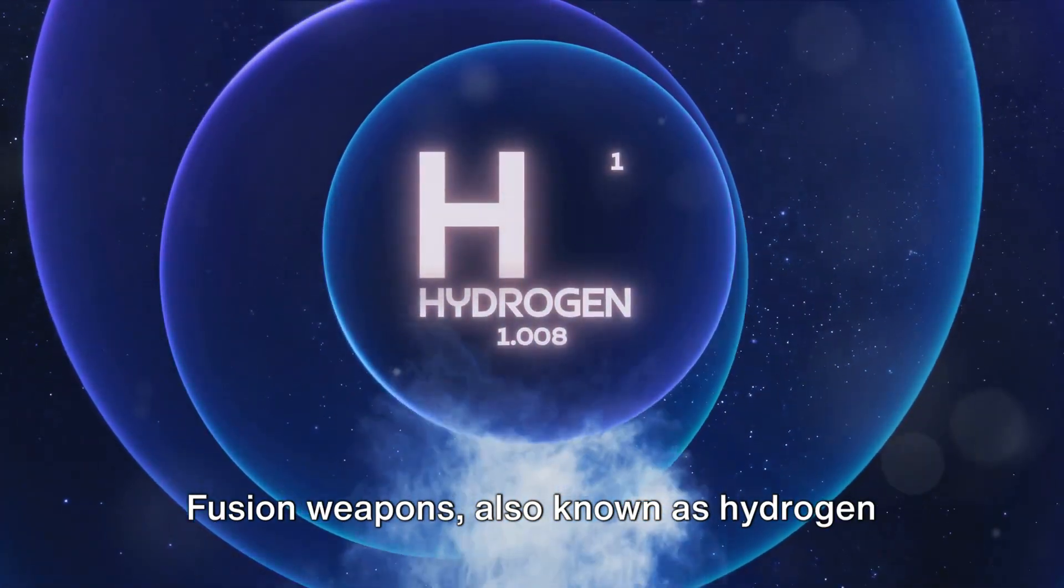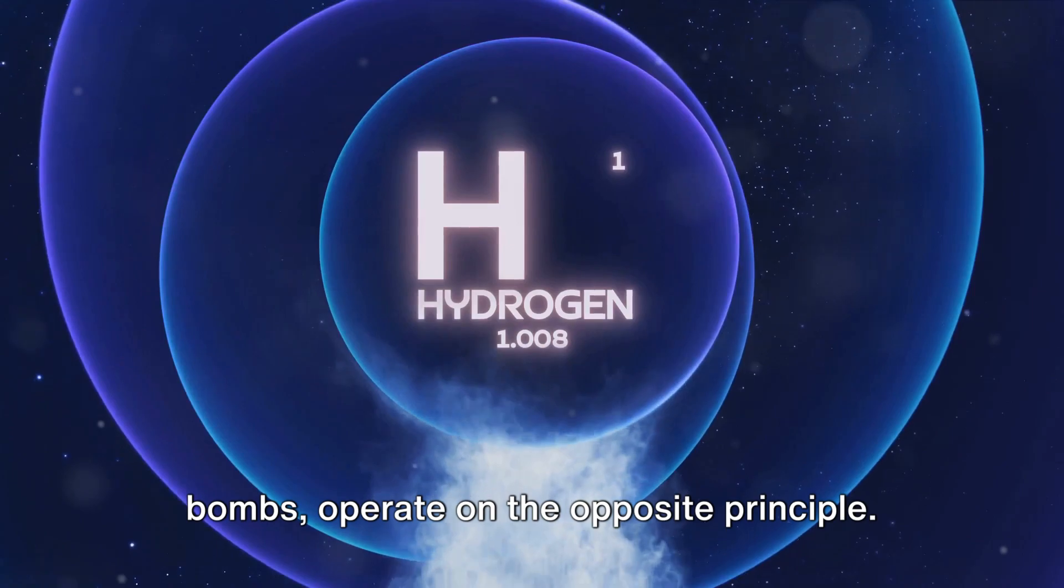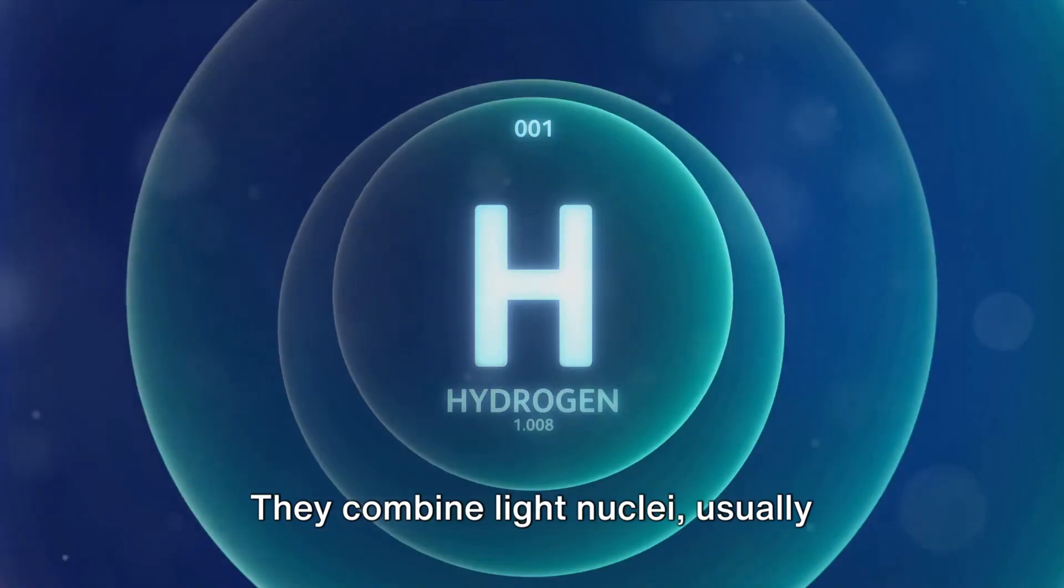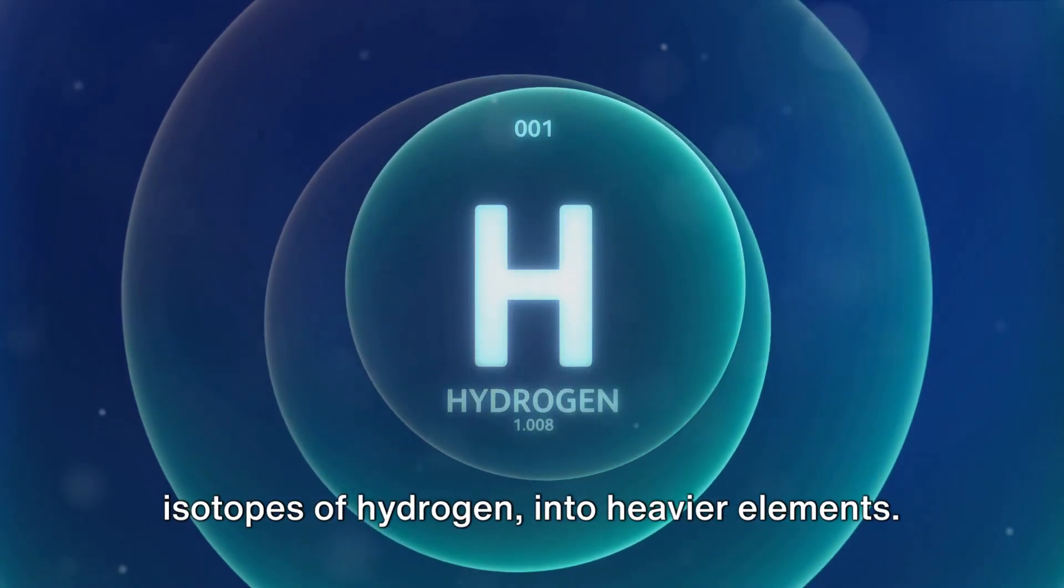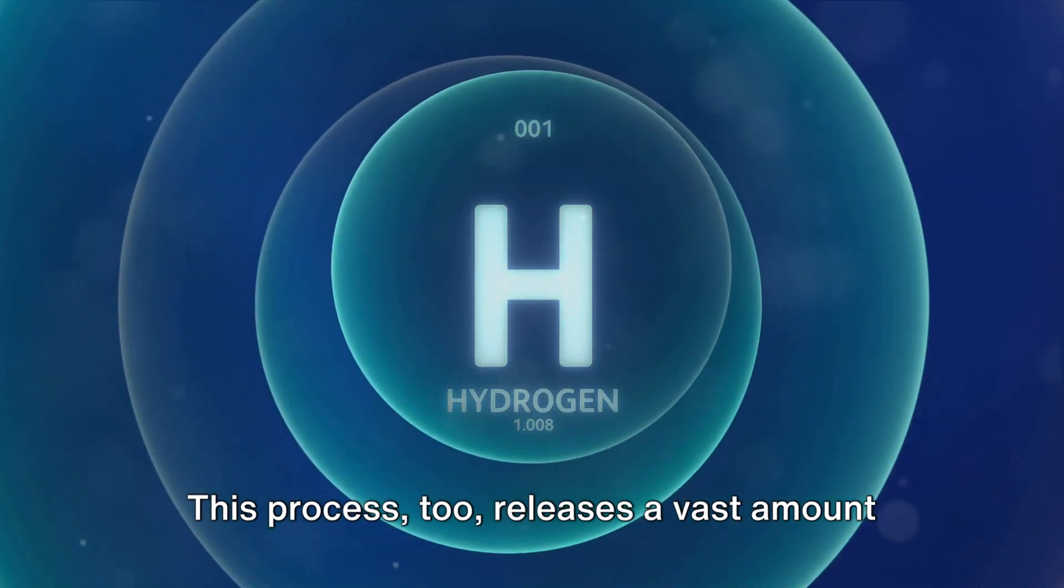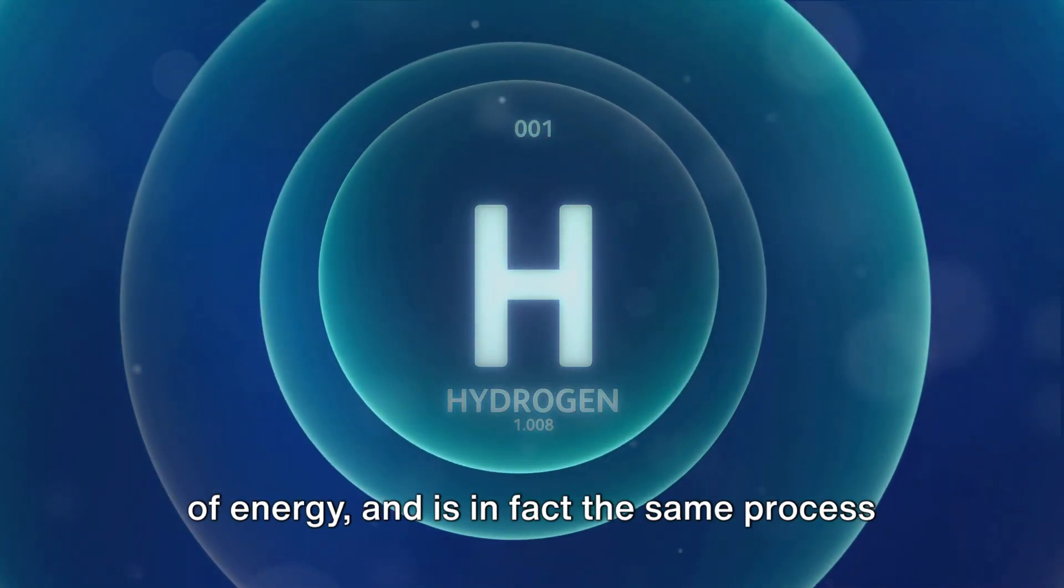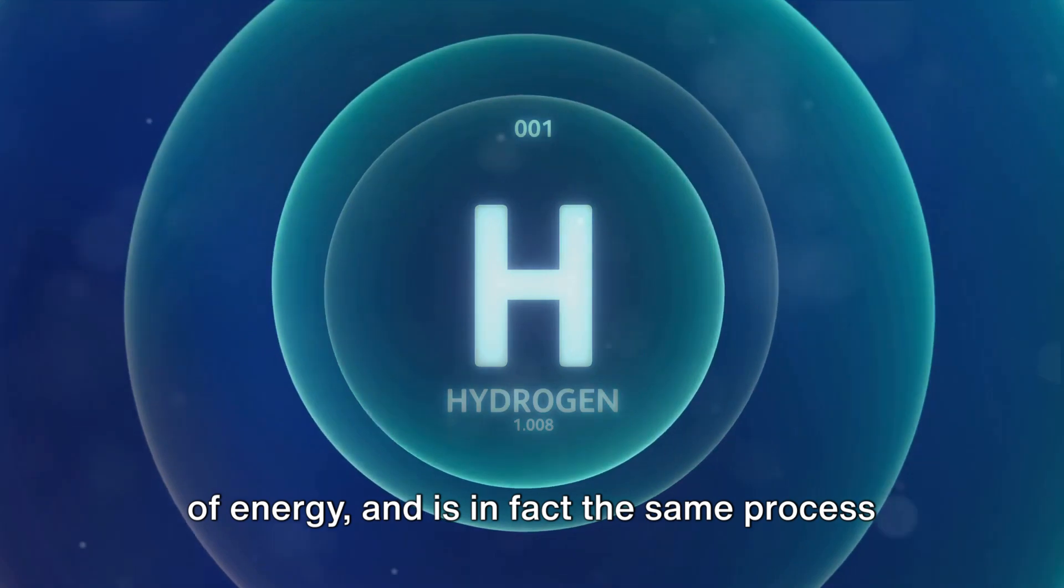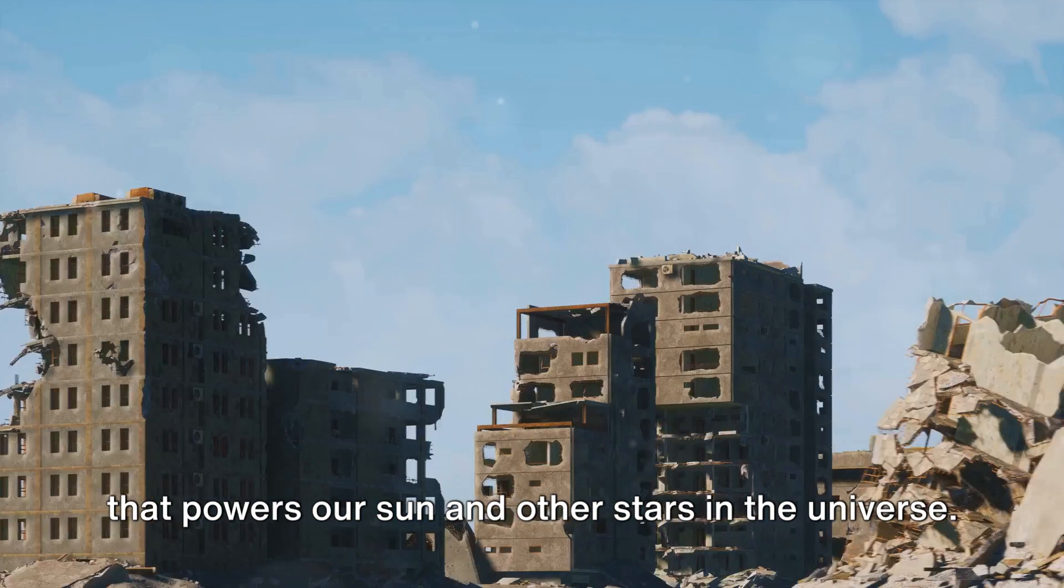Fusion weapons, also known as hydrogen bombs, operate on the opposite principle. They combine light nuclei, usually isotopes of hydrogen, into heavier elements. This process too releases a vast amount of energy and is in fact the same process that powers our sun and other stars in the universe.